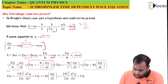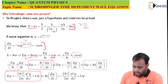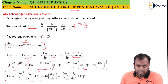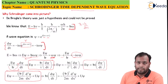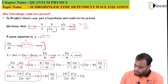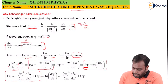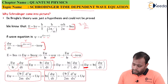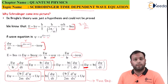Now we recall Schrödinger's time independent wave equation from the previous class. We substitute the value of Eψ — replacing it with iℏ · dψ/dt wherever Eψ appears. After this substitution and simplification, we obtain Schrödinger's time dependent wave equation. As you can see, there is now a factor of time present, which is why it is called the time dependent wave equation.